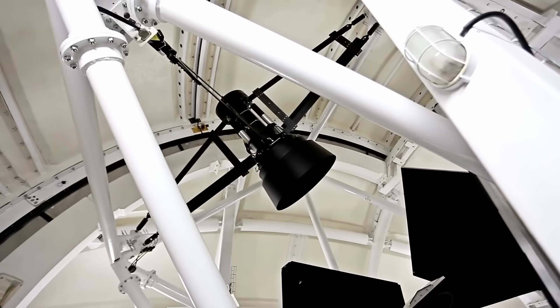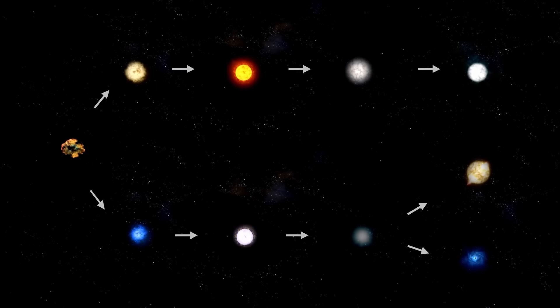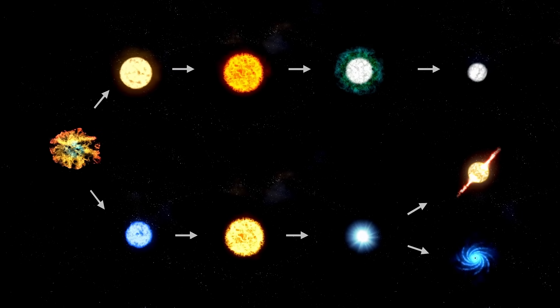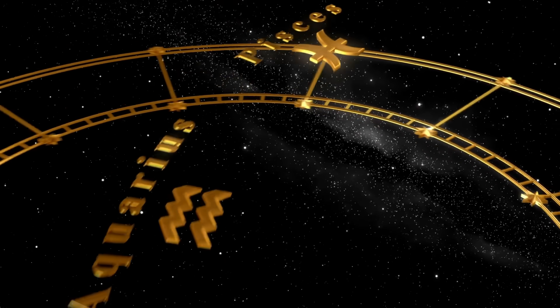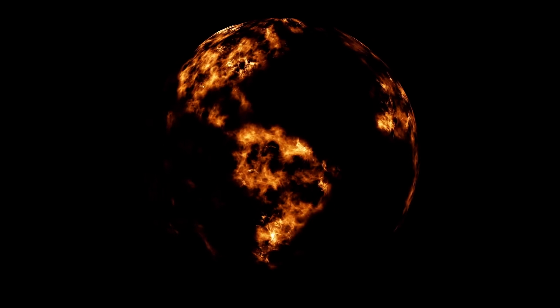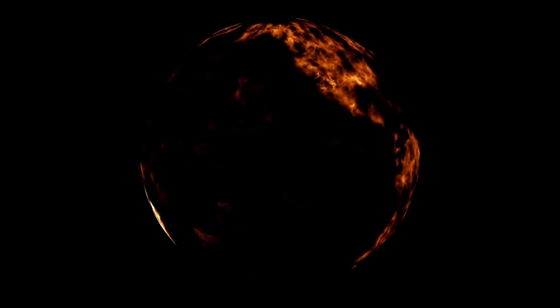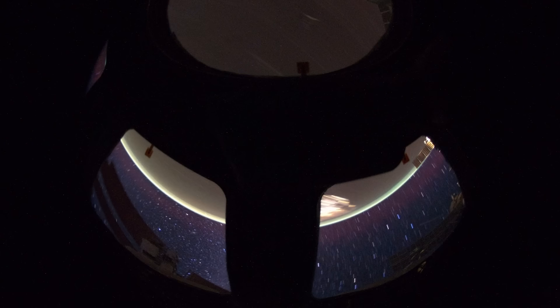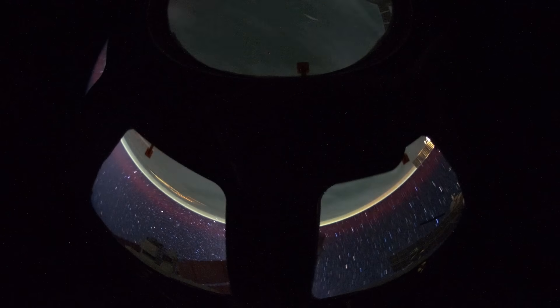Stranger still, its path was unnervingly precise. Most interstellar objects plunge in from awkward angles, tumbling unpredictably through the plane of our planets. This one aligned itself perfectly with the solar system's ecliptic, the thin flat disk along which our worlds travel. Hitting that plane by chance is like threading a needle across light-years. One astronomer muttered, it's flying like it knows where it's going. Quietly, in labs across the globe, that remark echoed. Deliberate.